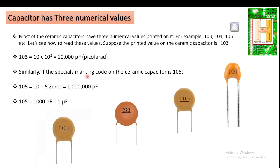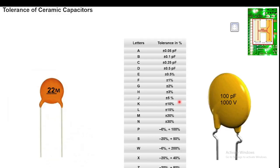For example, 104 means 10 × 10 raised to 4 picofarad. For 105, it is 10 × 10 raised to 5, which gives 1,000,000 picofarad — you can convert this to 1000 nanofarad, and 1000 nanofarad equals 1 microfarad. This is how you calculate a three-numerical-value ceramic capacitor.